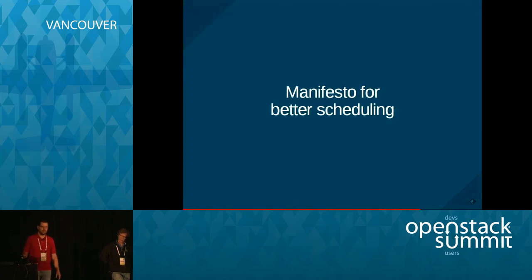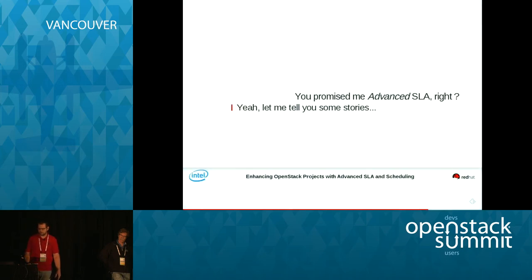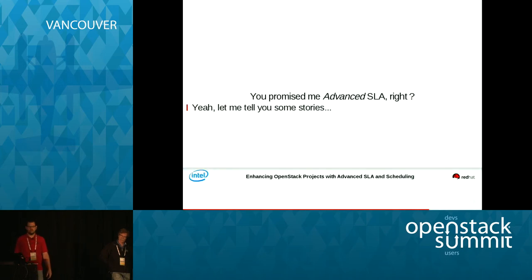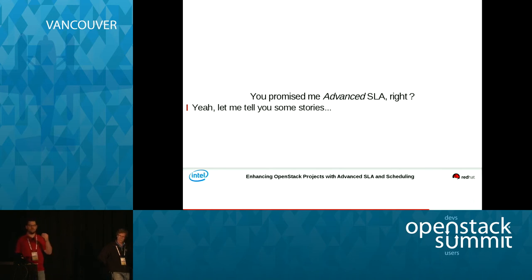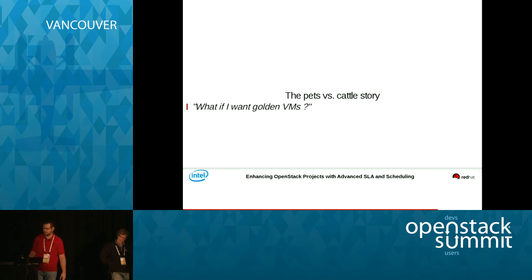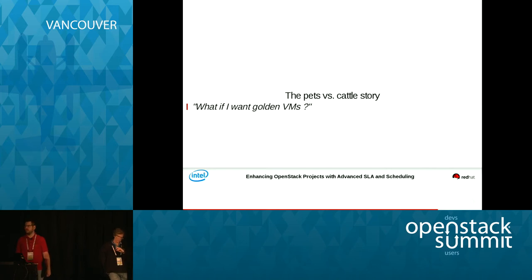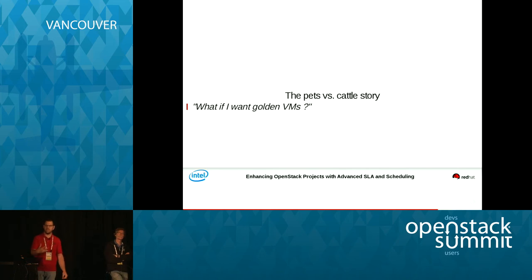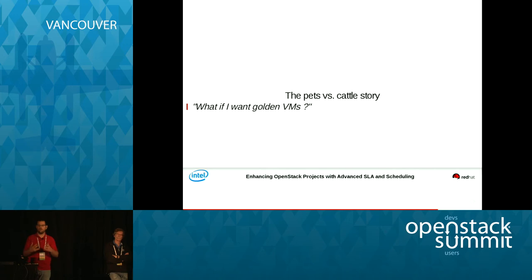That comes to my last section: the manifesto for a better scheduling. Like we said in the title, we promised advanced SLA. I will explain what I think we need for an advanced scheduler. What if I want golden VMs? What if I want highly available VMs? Some work is currently being done on providing high available VMs, but we may need a possibility within the scheduler to have this kind of golden rule that I want to enforce.